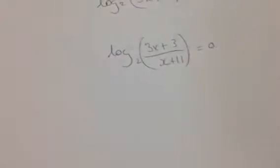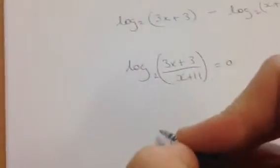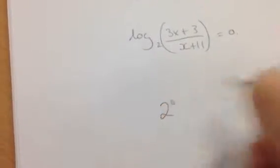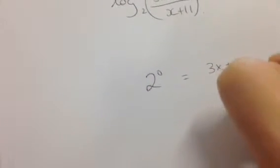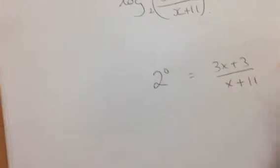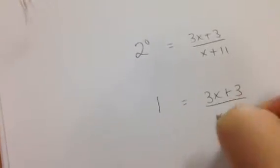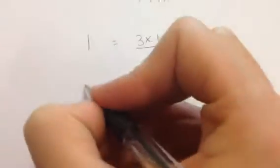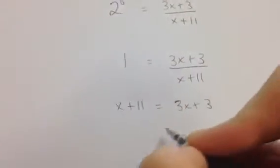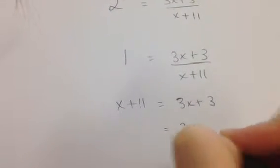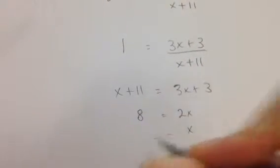Now I take it out of log format using the rule in the top right-hand corner of my log tables. I get 2 to the power of 0 equals (3x plus 3) all over (x plus 11). Anything to the power of 0 is 1, so x plus 11 times 1 equals 3x plus 3, which gives 2x equals 8, so x equals 4. I could substitute back in to check. That's using rules 1 and 2.